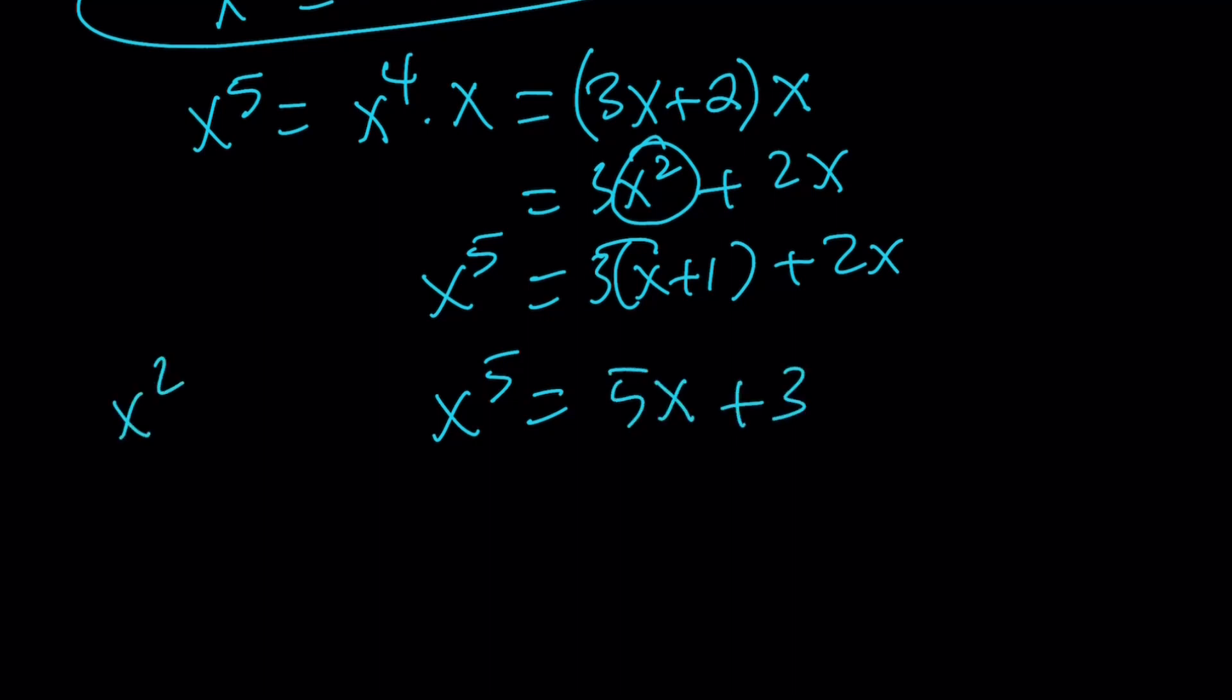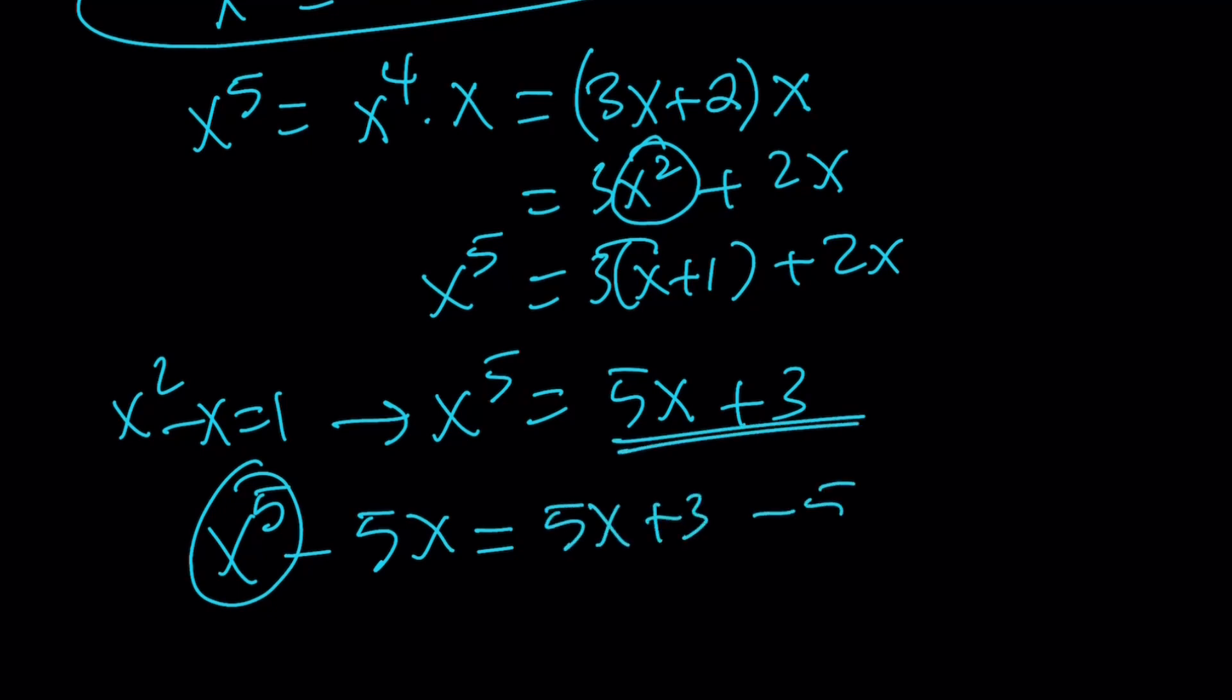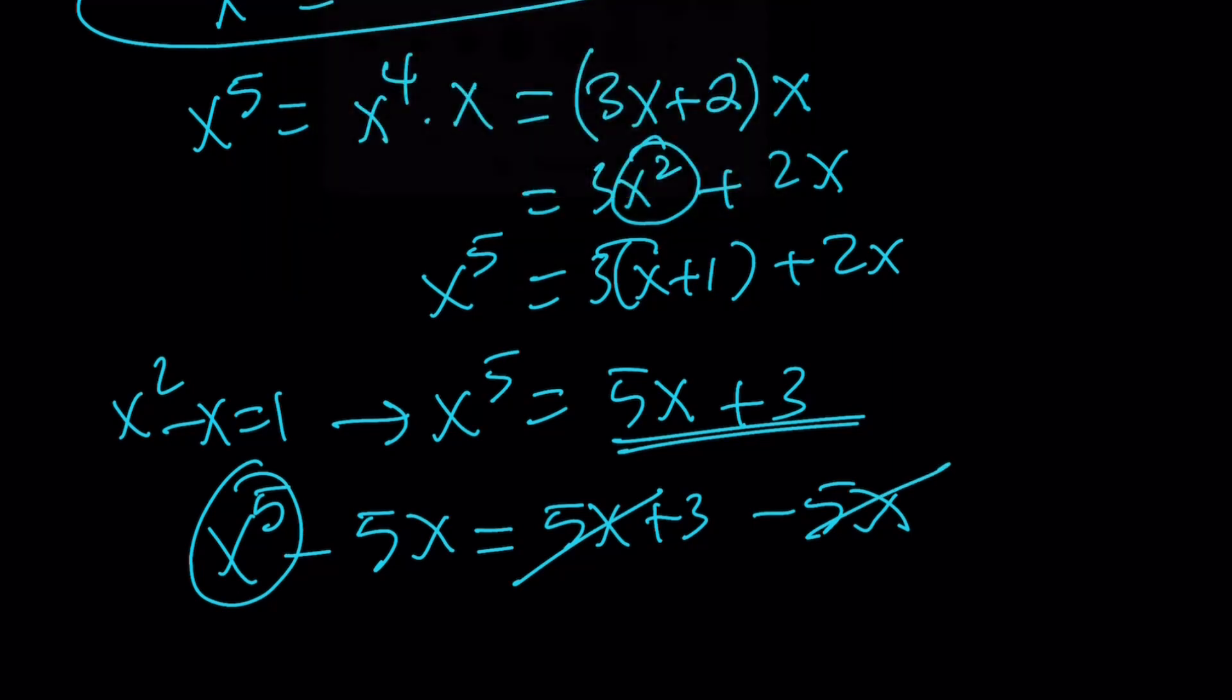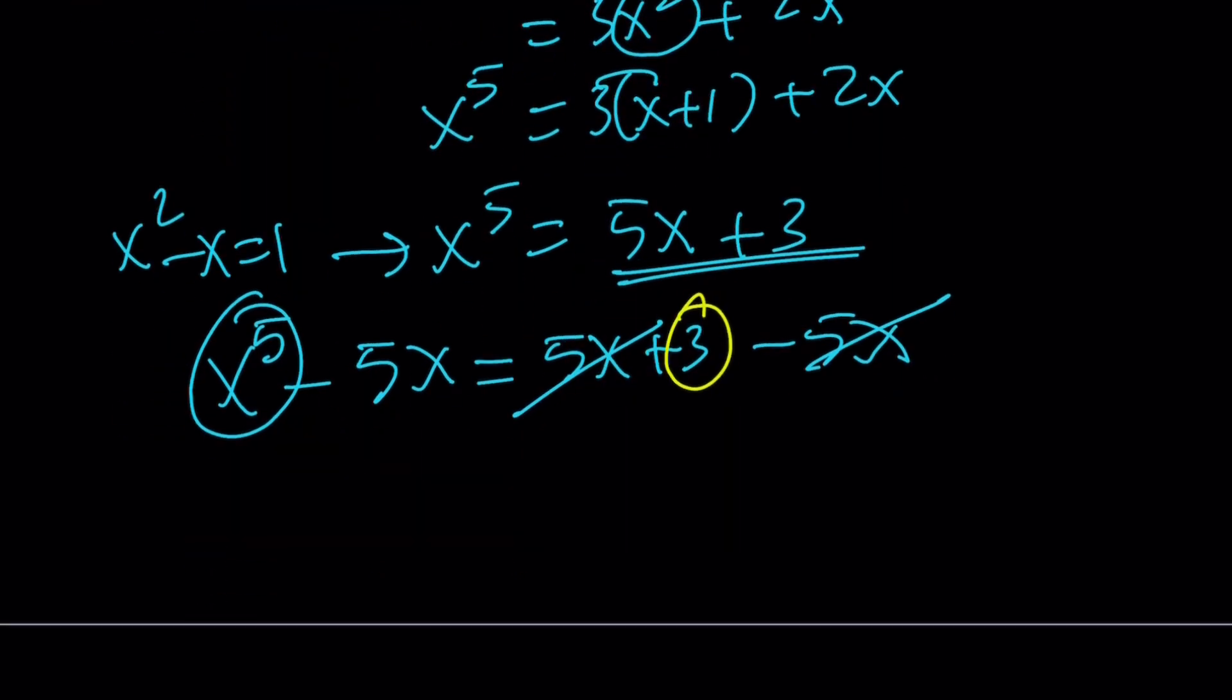Now we now know that if x squared minus x is equal to 1, then this is true. But how am I going to use it in my solution? Well, the problem was asking for the value of x to the 5th minus 5x. And if you replace x to the 5th with this, 5x plus 3, and then subtract 5x from it, you're going to realize 5x cancels out, and you end up with 3 as the answer.